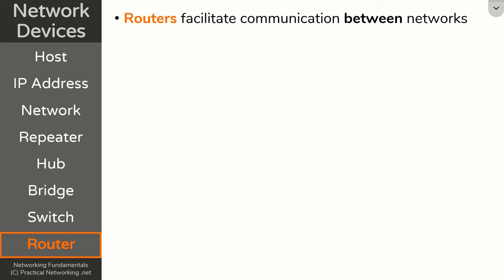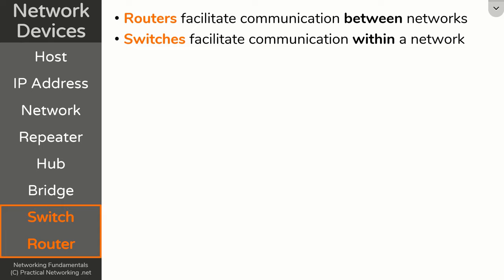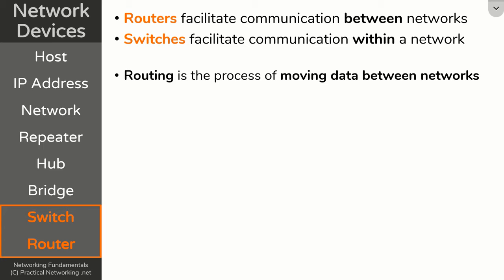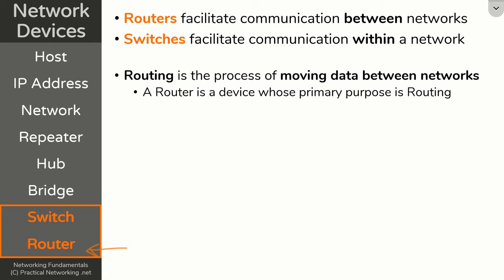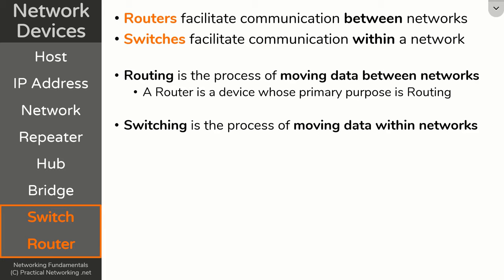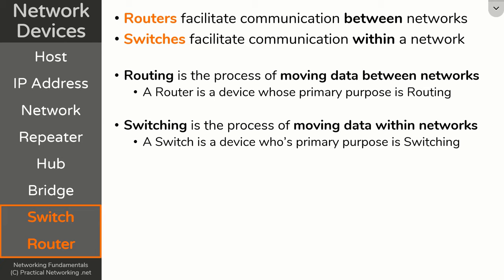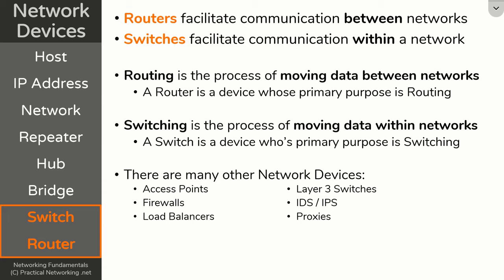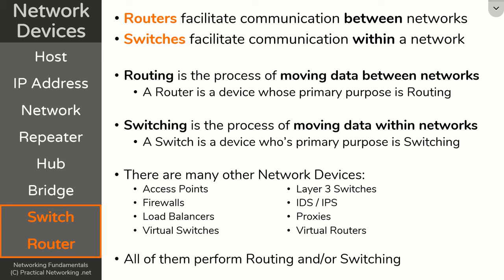The last idea involves pulling back the definitions of switches as well. Routing is the process of moving data between networks, and a router is simply a device whose primary purpose is to perform routing. In the same way, switching is the process of moving data within networks, and a switch is a device whose primary purpose is switching. The reason I bring that up is there are many other types of network devices — access points, firewalls, load balancers, layer three switches, proxies, and even devices that only exist in the cloud like virtual switches and virtual routers. One way or another, all of these devices are going to perform routing, switching, or both. So when we describe what a router or switch does, we are actually describing what any device does that implements routing or switching.